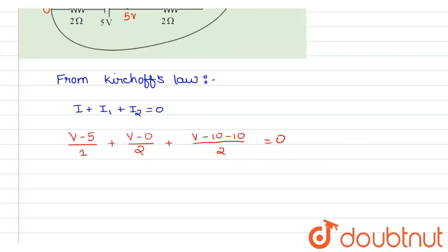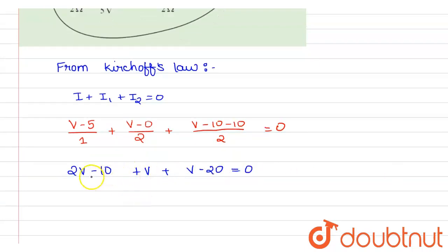So if we simplify it, we have to take LCM. It will be 2v minus 10 plus v, and the 2 will merge, so it will be v minus 20, and it equals zero. If we solve this, it will be 4v equals 30, so 4v will be equal to 30, and our voltage will be finally 15/2 volts.